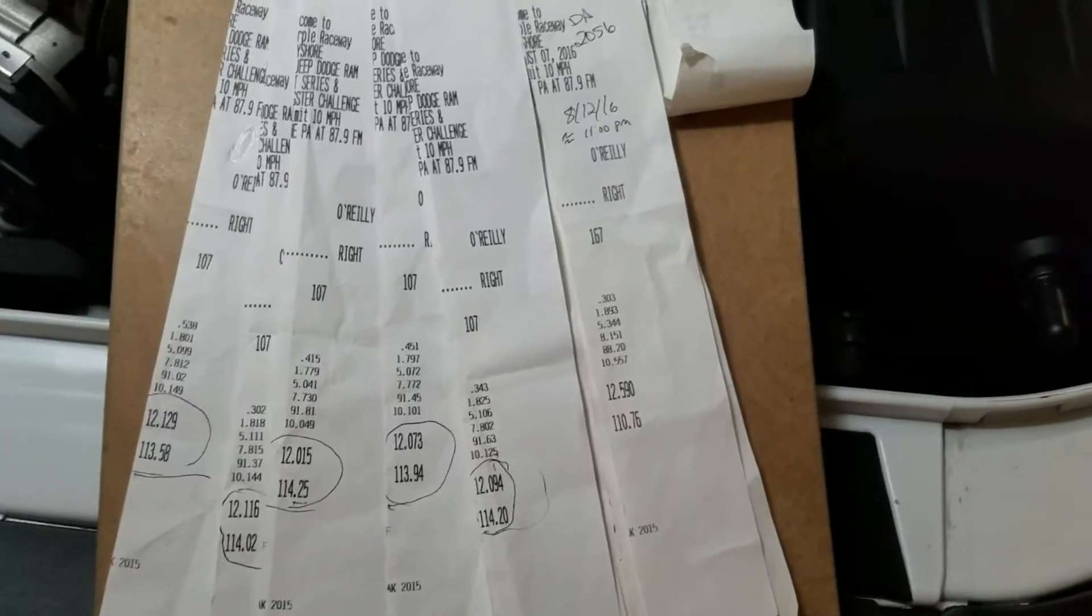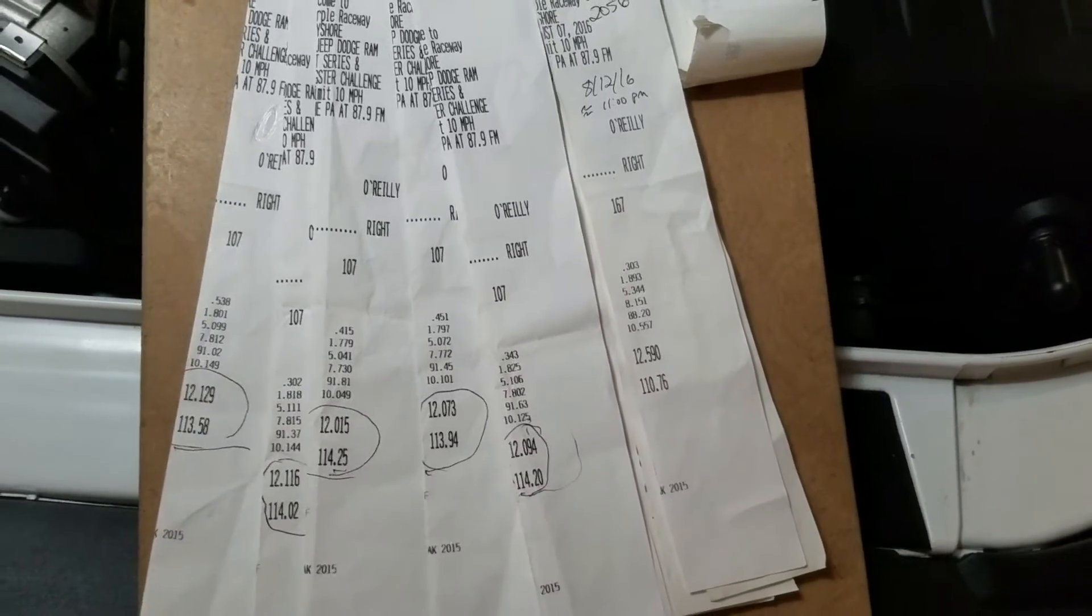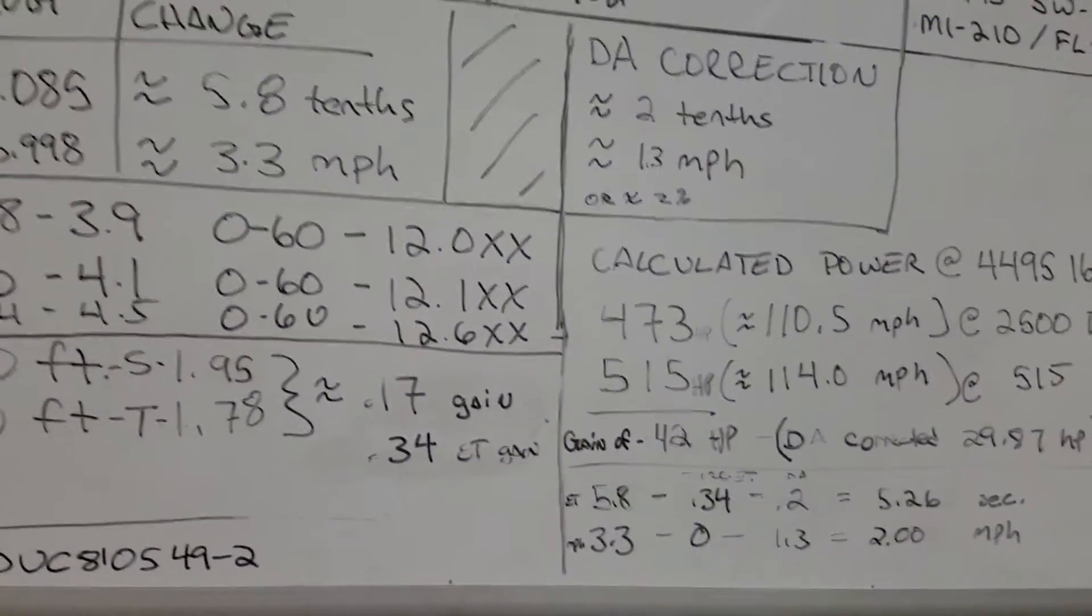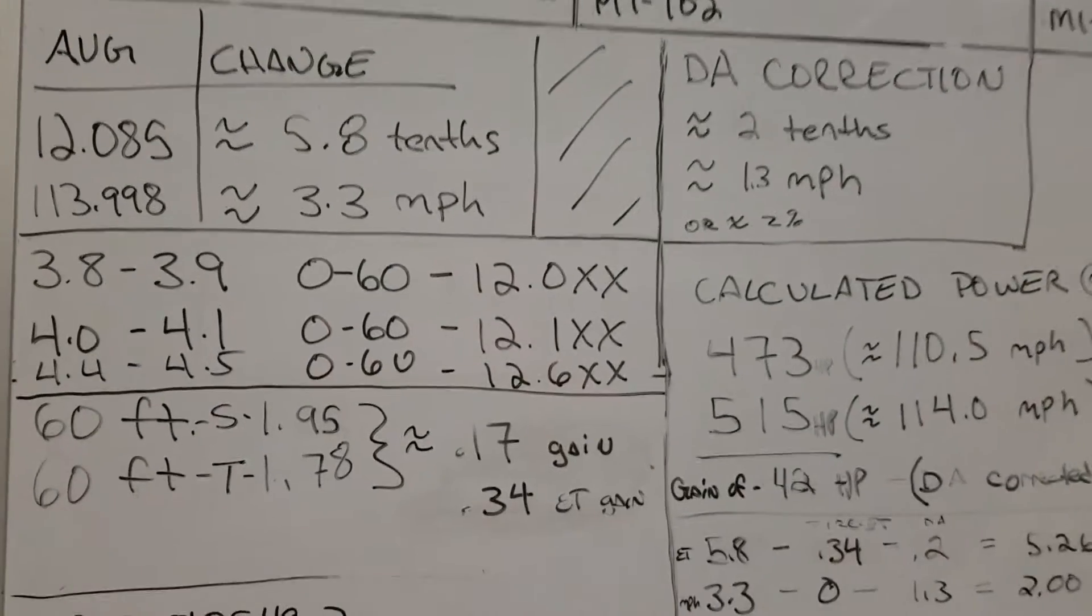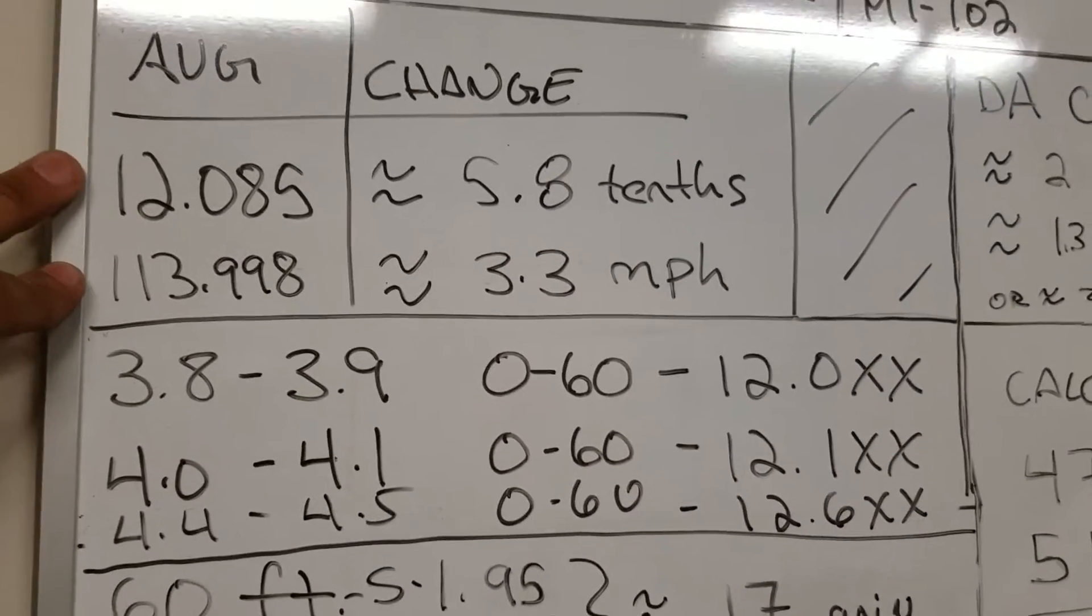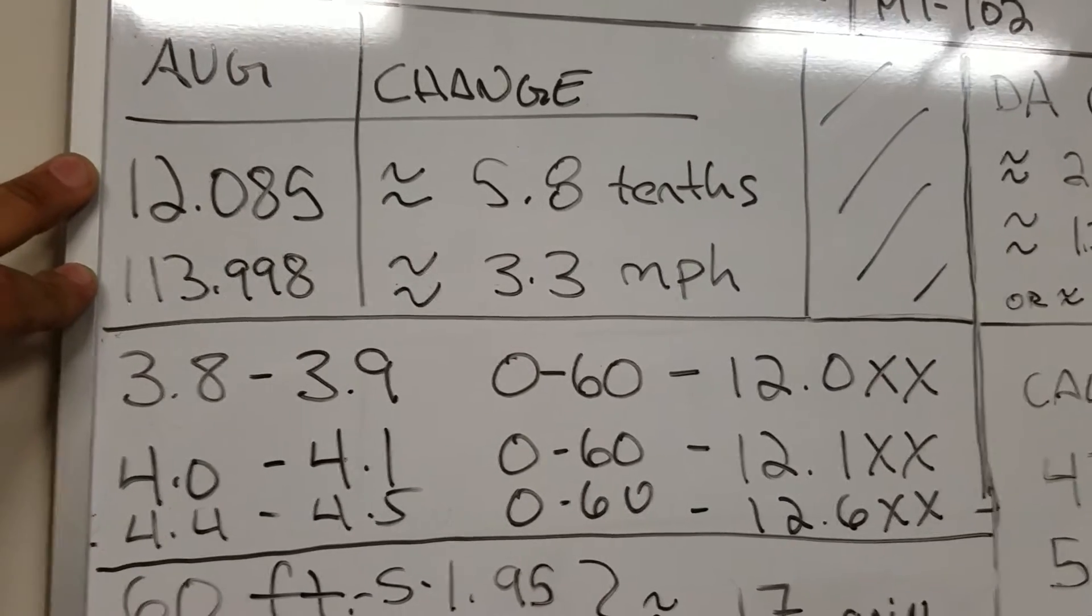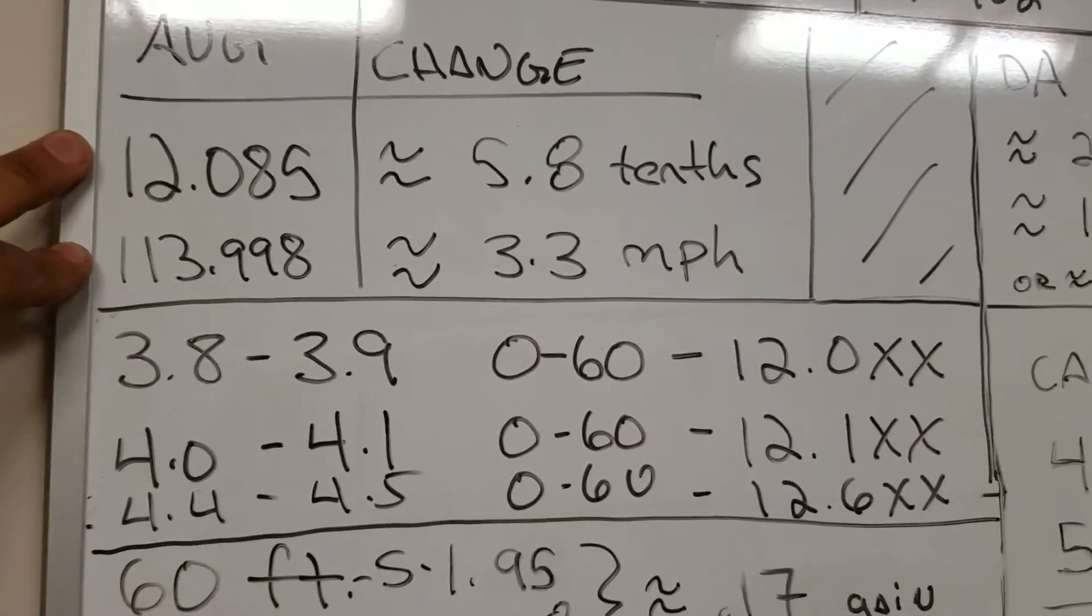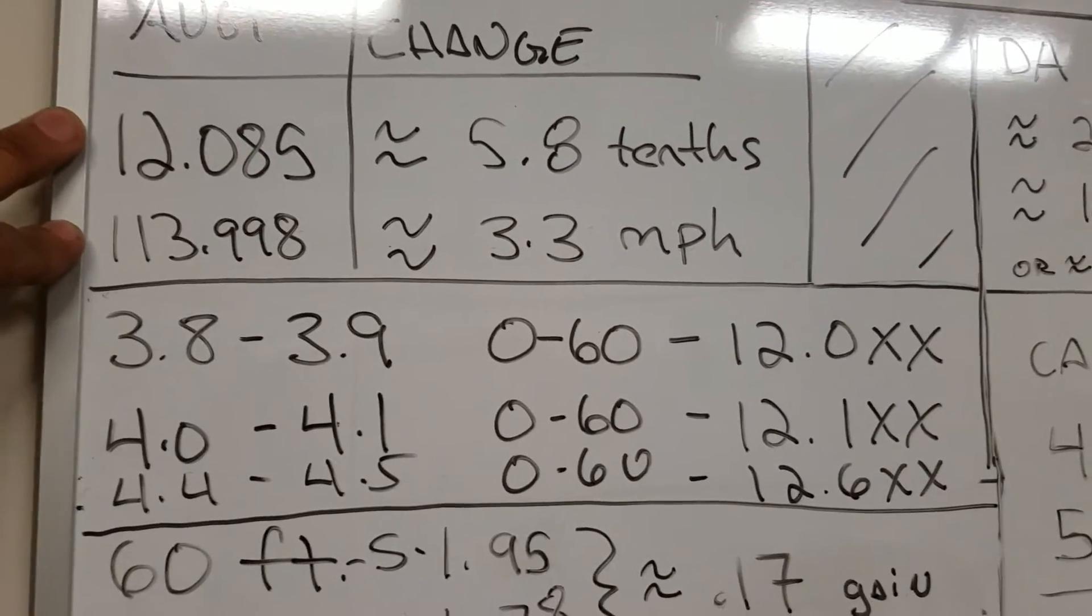But I want to get to that density altitude correction and the tune and what it all meant in the big picture. So here is a dry erase board full of data. So let's jump right in the middle of this. Okay, so these numbers here, these are not any kind of correction. These are just straight improvements over what it did with the stock tune and the stock tires.